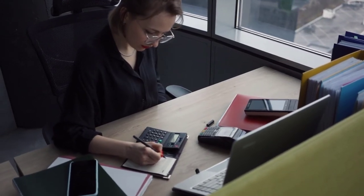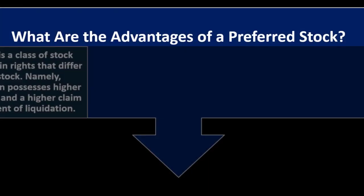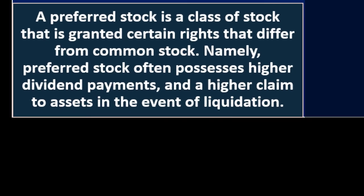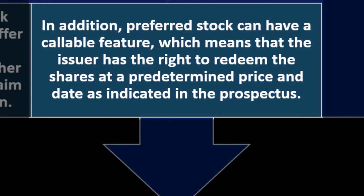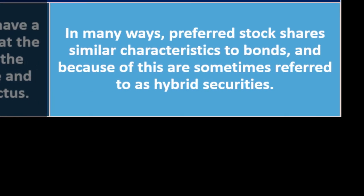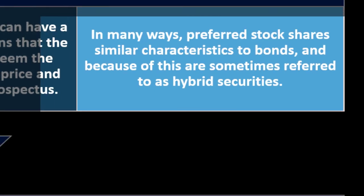What are the advantages of preferred stock? Preferred stock is a class of stock granted certain rights that differ from common stock — namely, higher dividend payments and a higher claim to assets in the event of liquidation. In addition, preferred stock can have a callable feature, giving the issuer the right to redeem the shares at a predetermined price and date as indicated in the prospectus. In many ways, preferred shares have similar characteristics to bonds and are sometimes referred to as hybrid securities.